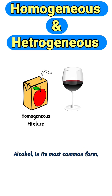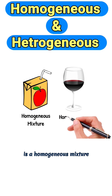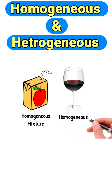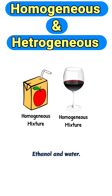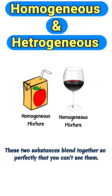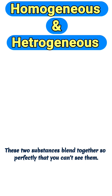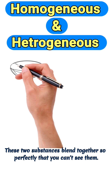Alcohol, in its most common form, is a homogeneous mixture. Because it's made up of two main components, ethanol and water. These two substances blend together so perfectly that you can't see them separately.